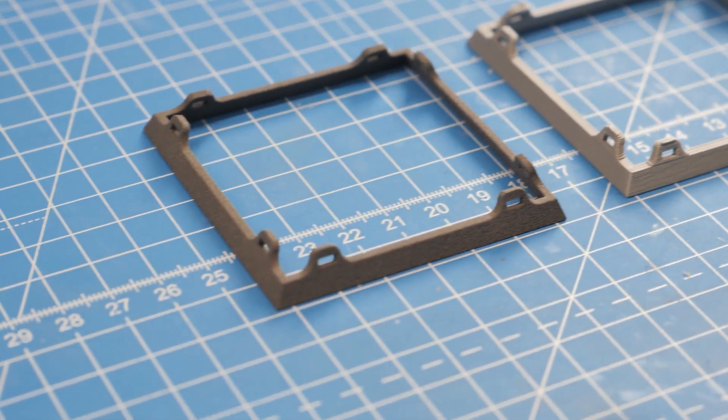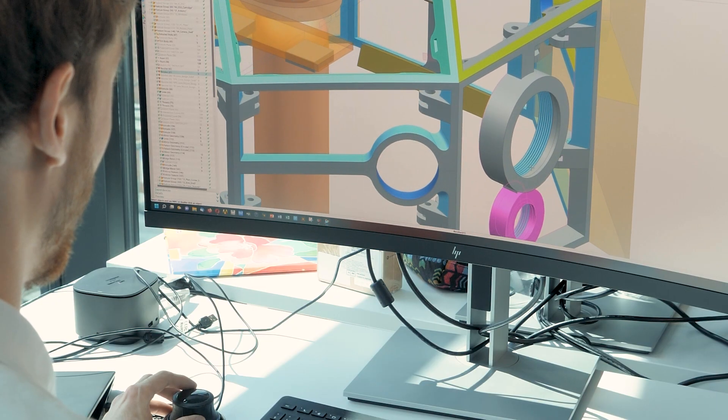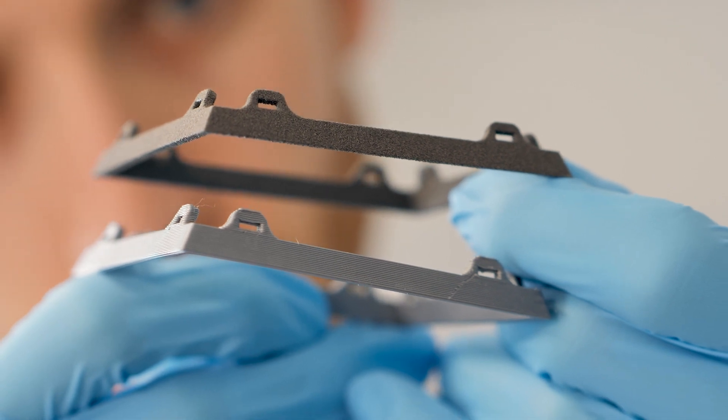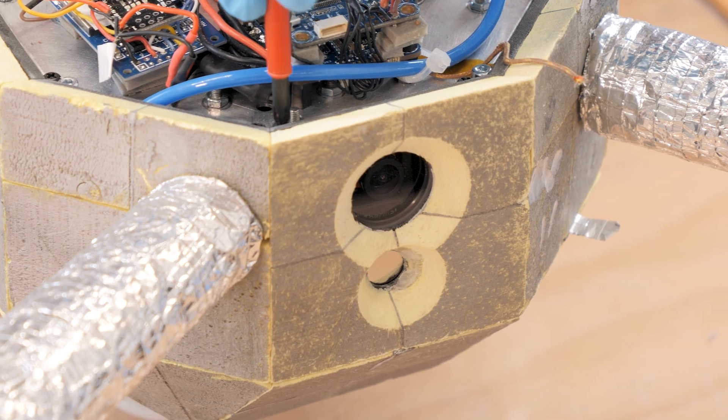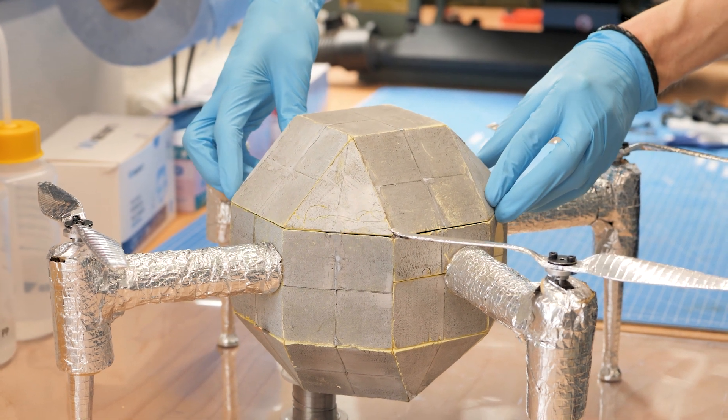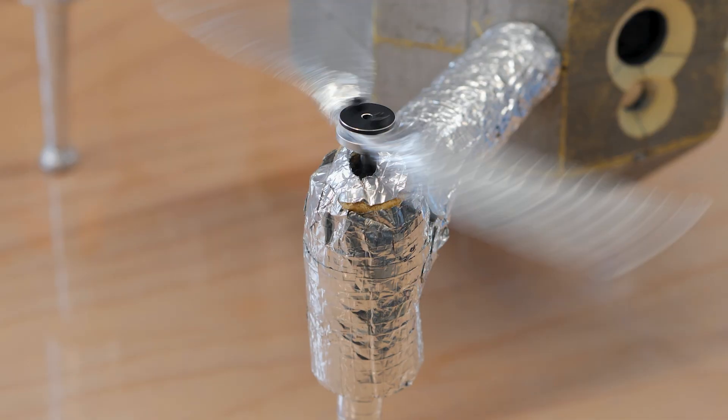Compared to FDM printing, SLS allows to not even use any supports and the quality of the prints as well as the strength of the components is a great asset for drone construction.